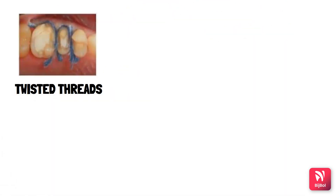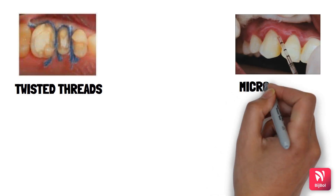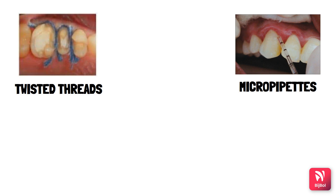Another method uses pre-weighed twisted threads placed into the gingival sulcus. The threads are weighed before placement; after collection, the difference between the pre-placement weight and post-placement weight gives the amount of GCF collected. Another method uses micropipettes, which collect GCF by capillarity using standard length and diameter tubes placed into the pocket; the contents are centrifuged and analyzed.